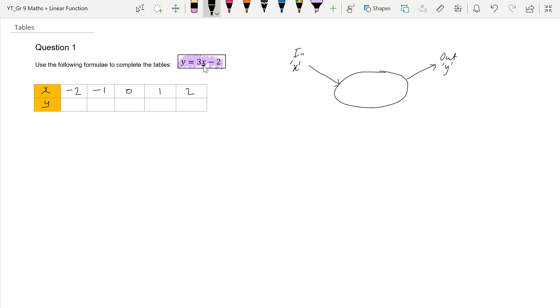So it is saying we have to take our input value of x, and we need to times that by 3. So we take our input value, whatever it is, we're going to times it by 3, and then we have to take 2 away, and then that will give us our output value.